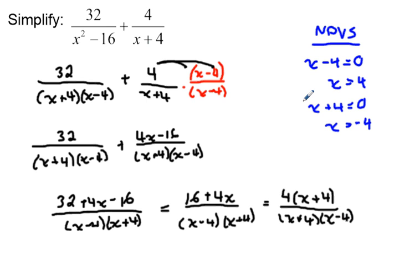So now comparing the top and the bottom, I can see I have a common factor of x plus 4 on both the top and bottom, so it would cancel to further simplify.